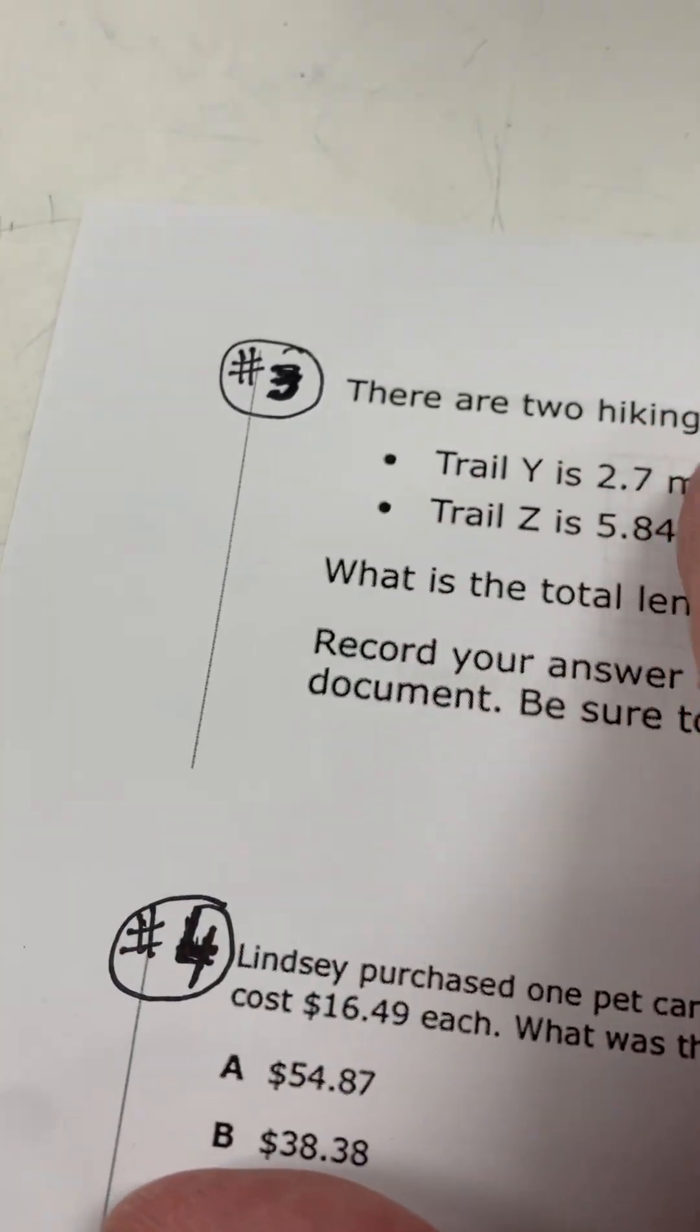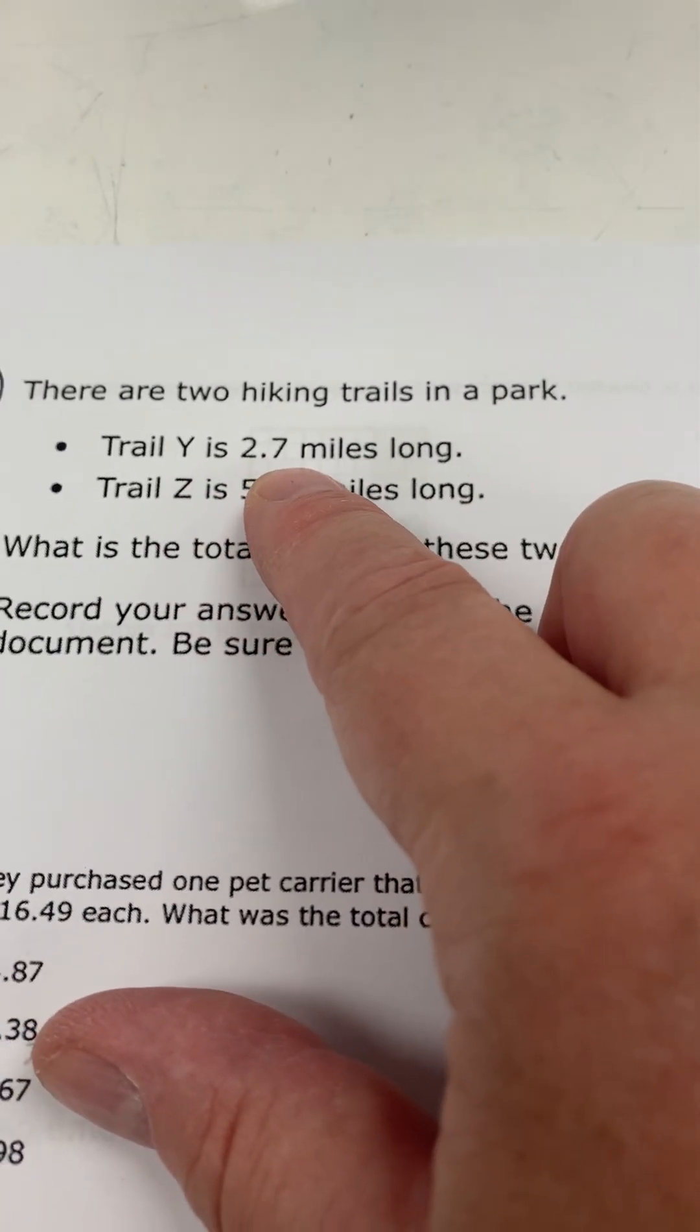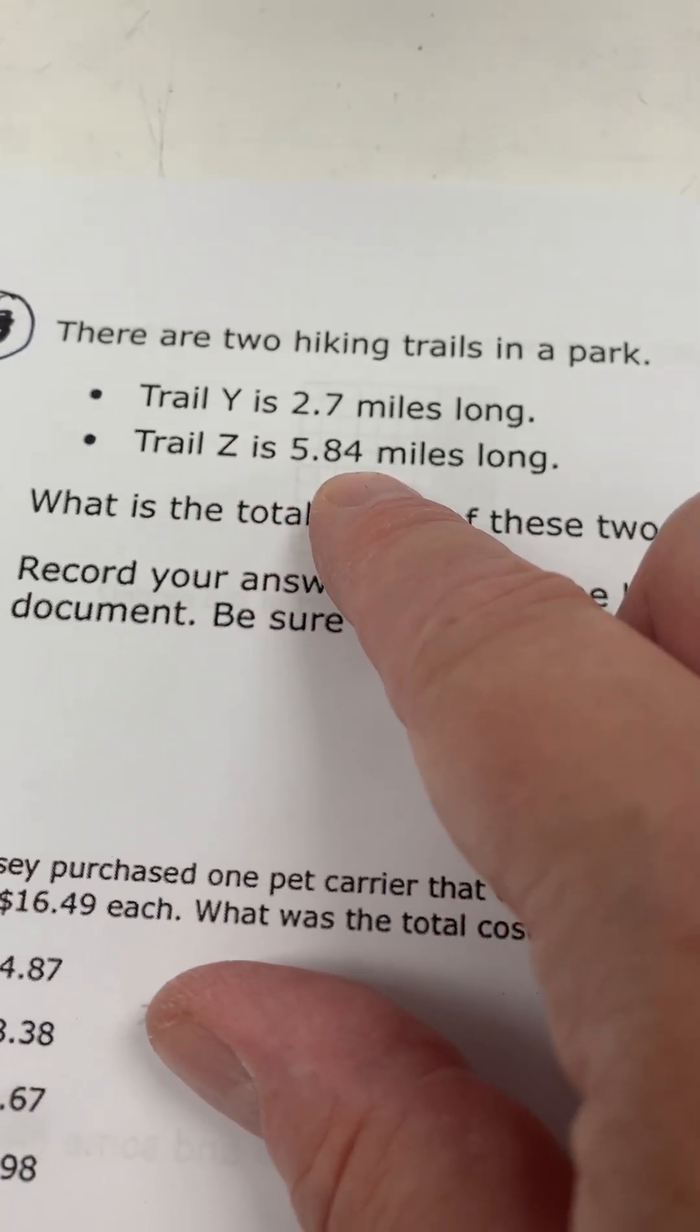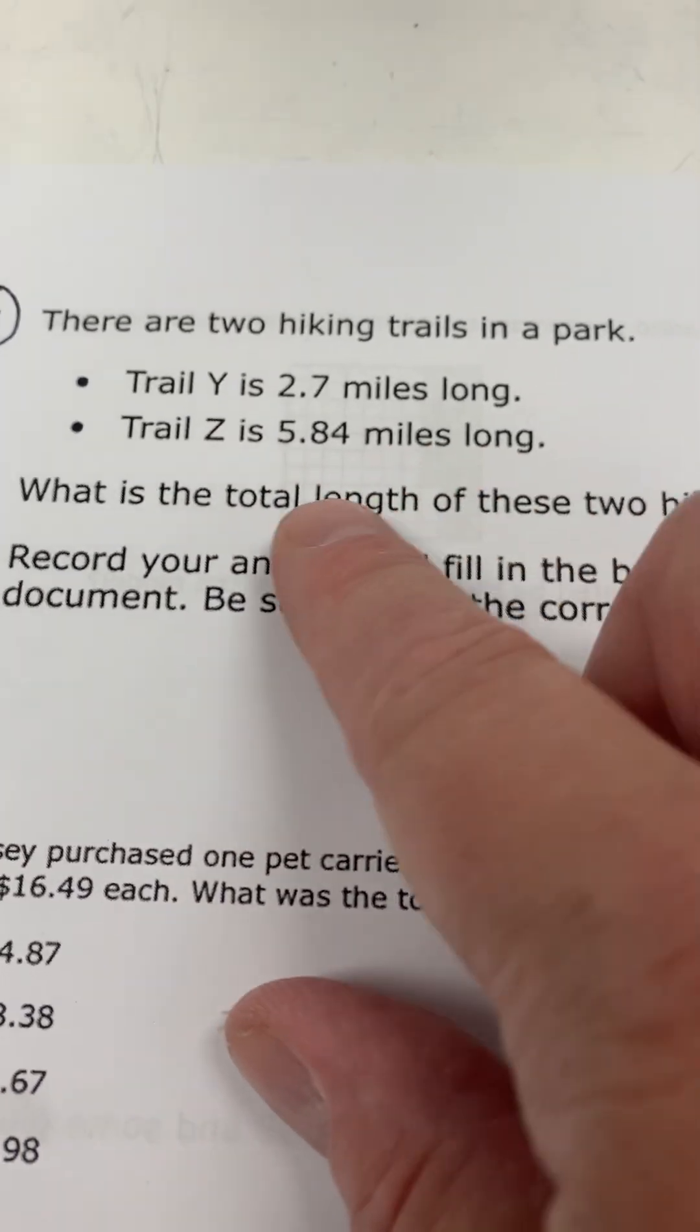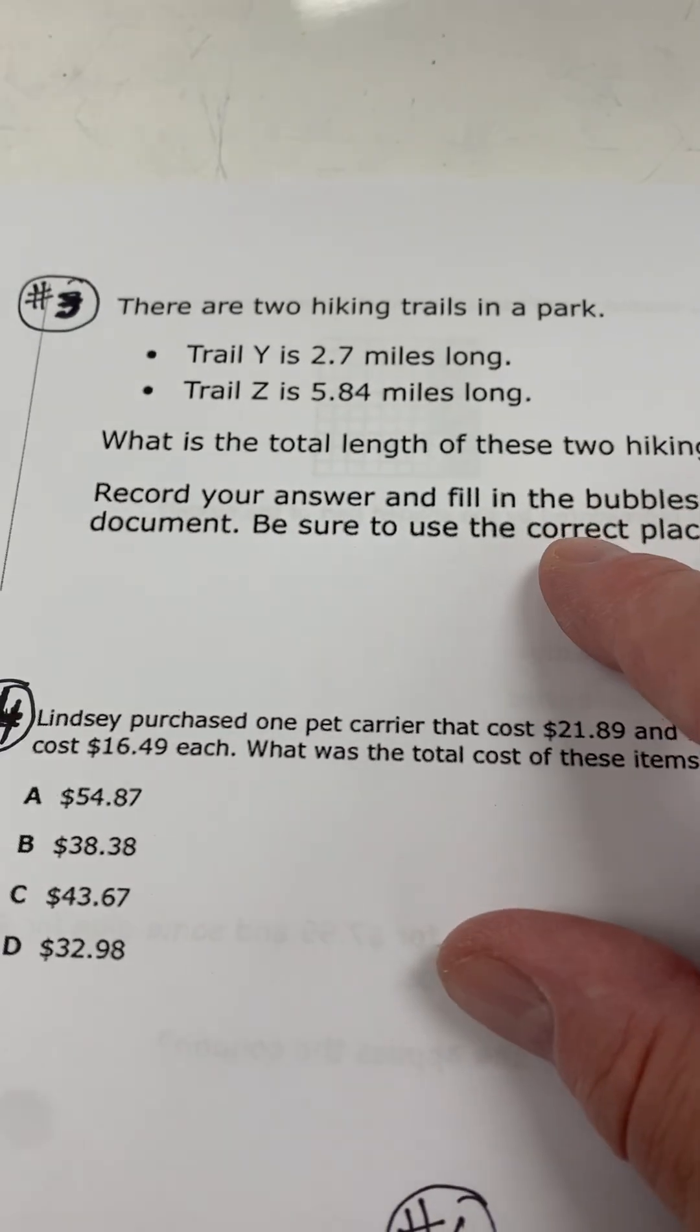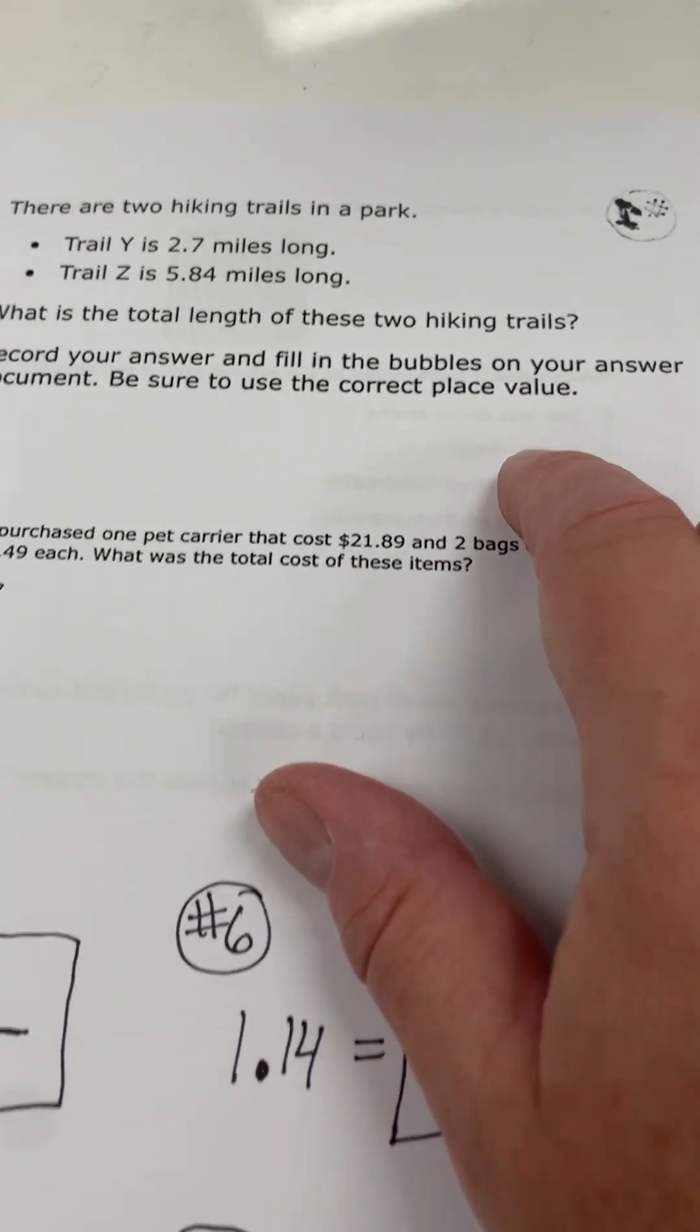So there are two hiking trails in a park. Trail Y is 2.7 miles long. Trail Z is 5.84 miles long. What is the total length of these two hiking trails? So show your work and then circle it down here.